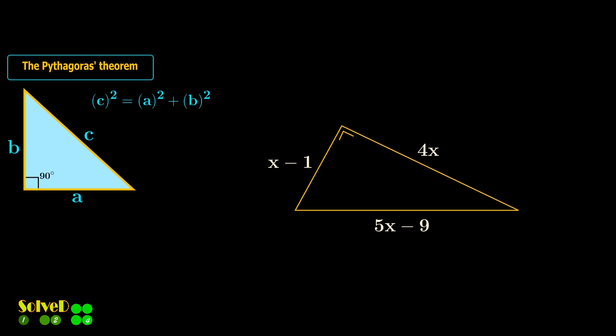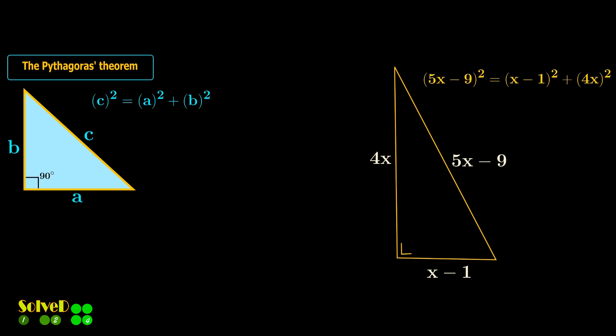Let's rotate the given triangle. For the given triangle, the side opposite to the right angle is 5x minus 9. So it is related to the other two sides by this equation.